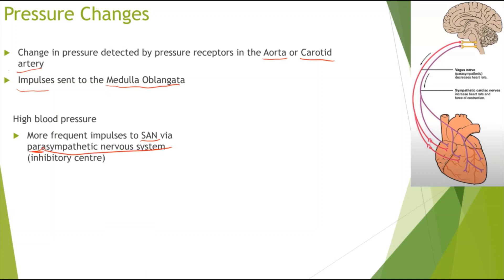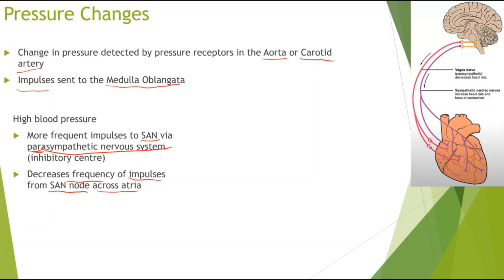Remember, the parasympathetic nervous system decreases the heart rate. So because we have high blood pressure, we want to lower it by lowering the heart rate. More frequent impulses are sent to the SAN by the parasympathetic nervous system, which decreases the frequency of impulses from the SAN across the atria, decreasing the heart rate so that blood pressure falls to normal.